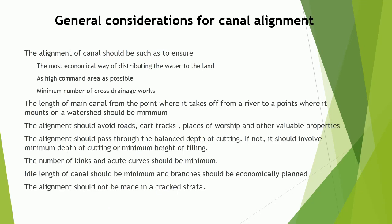General considerations for canal alignment: the alignment of a canal should ensure the most economical way of distributing water to the land, as high a command area as possible, minimum number of cross drainage works, and minimum length of main canal from the river to the watershed. The alignment should avoid roads, cart tracks, places of worship, and other valuable properties. It should pass through balanced depth of cutting, involving minimum depth of cutting or filling, minimum kinks and acute curves, minimum idle length of canal, and should not be made in cracked strata.